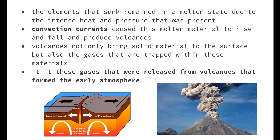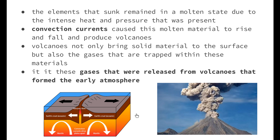Convection currents mean that when the liquid is heated, it rises to the surface of the Earth. The surface is cooler the further you get from the core, so the material becomes heavier and falls back down, creating a constant circular motion of the molten mantle. When this molten material passes through the surface of the Earth, we have a volcano. Volcanoes bring not only solid material to the surface, but also the gases trapped within these materials, and it is these gases that formed the early atmosphere.